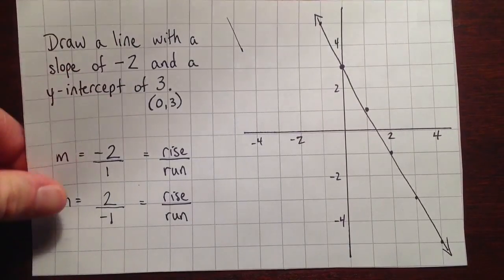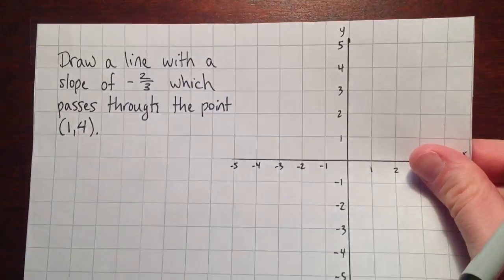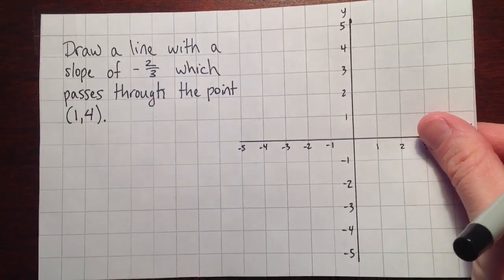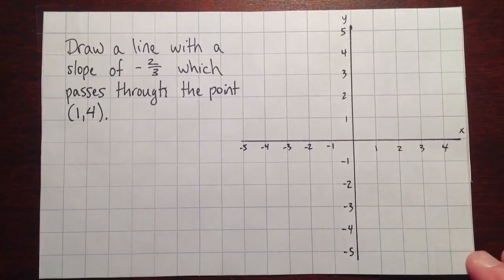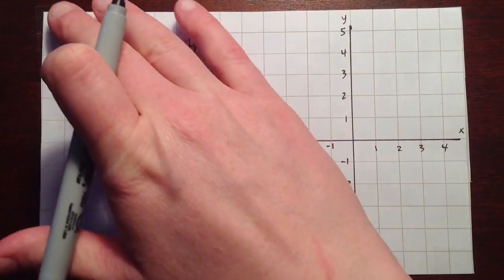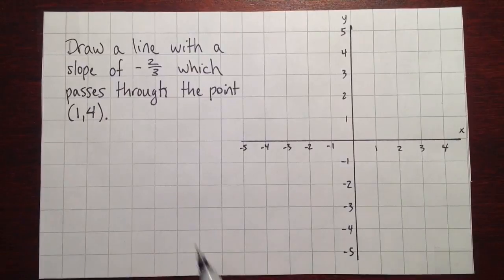Okay, so for another example. Suppose I wanted to draw a line with a slope of negative 2 thirds that passes through the point (1, 4).